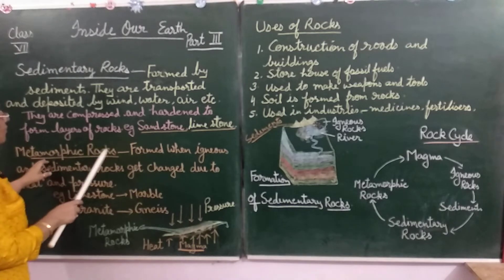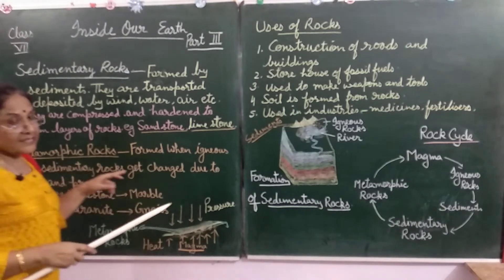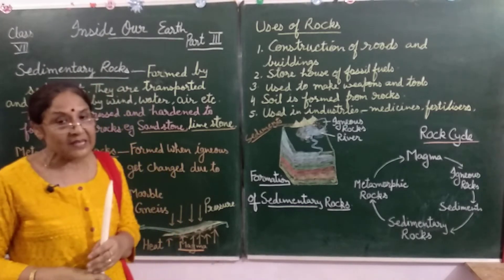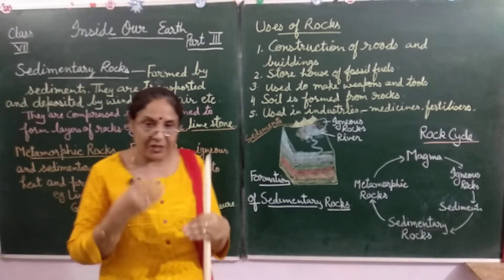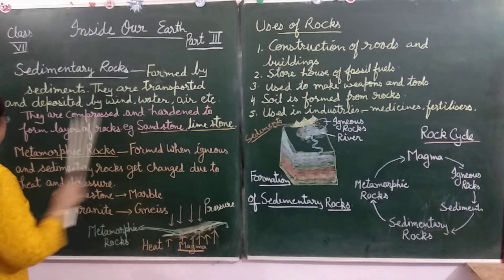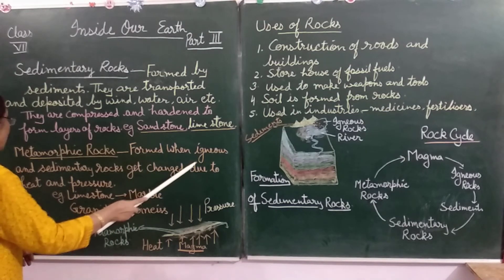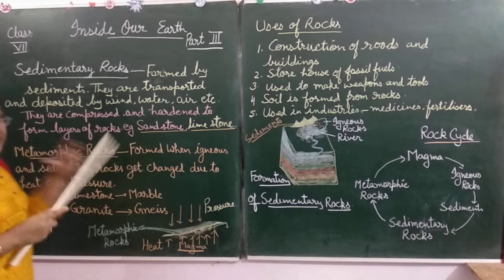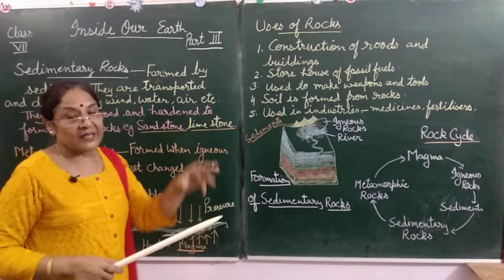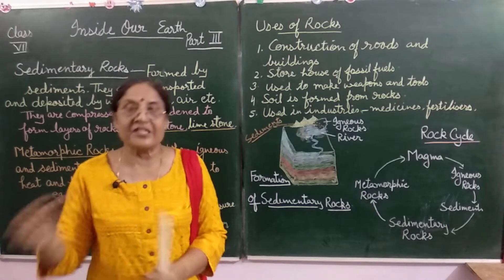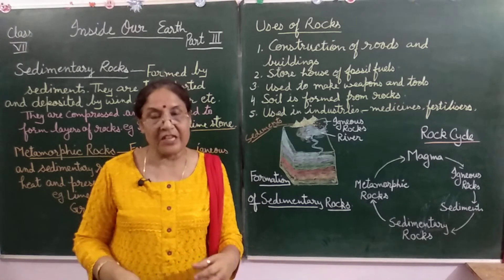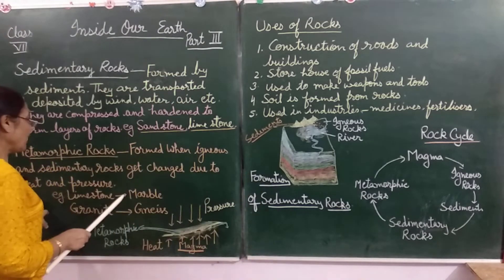Now, let's come to metamorphic rocks. The word 'metamorphic' is taken from the Greek word 'metamorphose,' which means 'change in form' — their original form changes. Metamorphic rocks are formed when igneous and sedimentary rocks get changed due to great heat and pressure, changing their original form. The new changed form of rocks is known as metamorphic rocks.